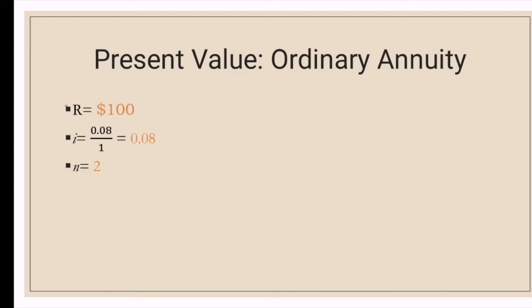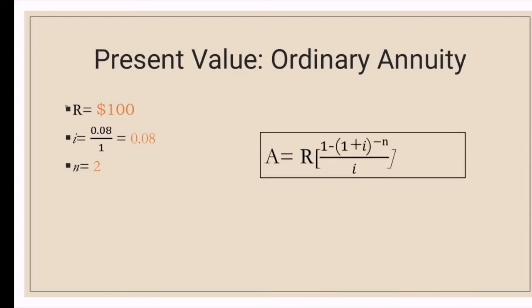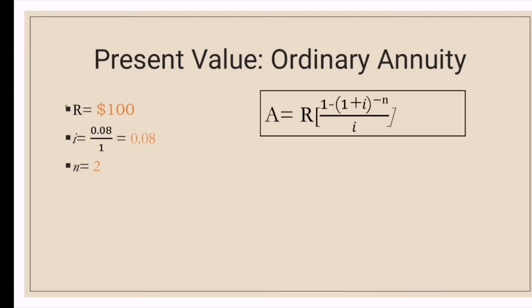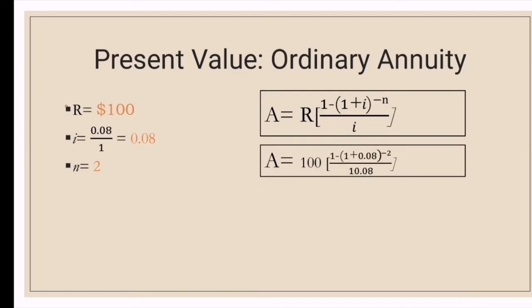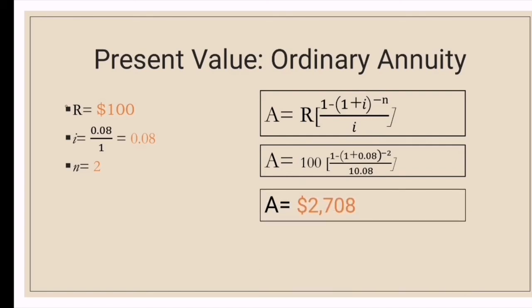Now let's substitute the given data into the equation. By doing all the calculations, we arrive at the present value of the ordinary annuity, which is equal to $178.33.